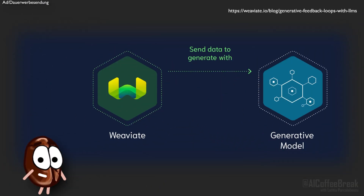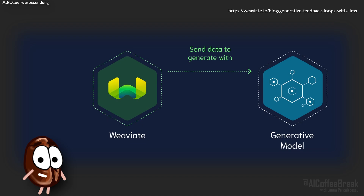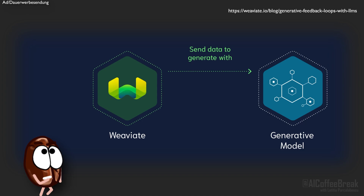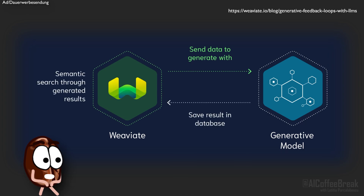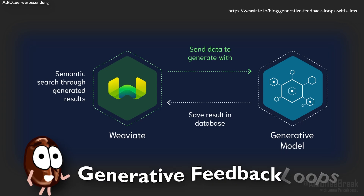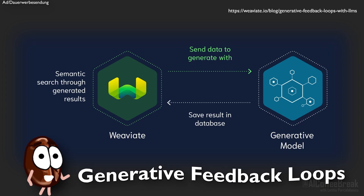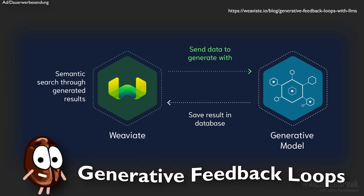It's already common industry practice to fetch additional information from a vector database to support large language models with factual knowledge. But that invested compute time in generating outputs can be even better invested if you want to use the outputs of your language model in the future. Then you need to store the outputs again and make them searchable and fast to retrieve — and this is where generative feedback loops come in handy. They store the generated outputs back into the database with a vector embedding.